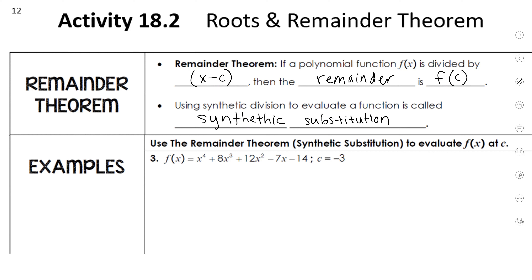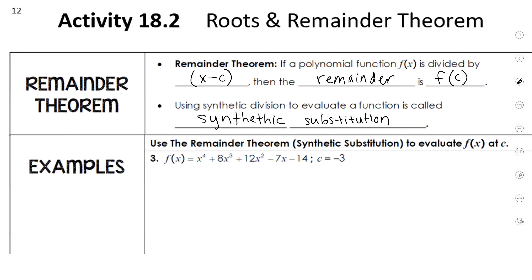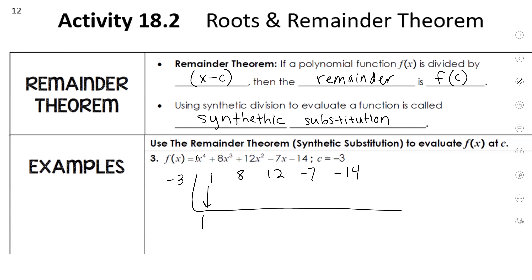We're going to use synthetic substitution, or the remainder theorem, to evaluate f of x at c. We're given this long polynomial, and I want to know: if I plug in negative 3, what's my answer? You can either just plug in negative 3 into all the x's and figure it out, or you can use the remainder theorem. So using synthetic division, I'll put all of my coefficients: 1, 8, 12, negative 7, negative 14, and put negative 3 here.